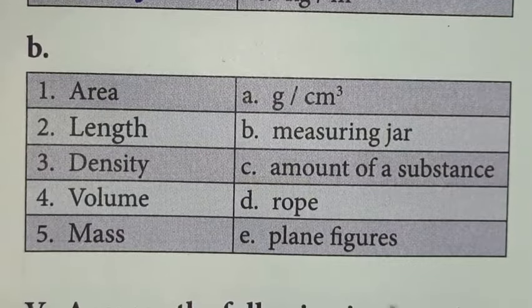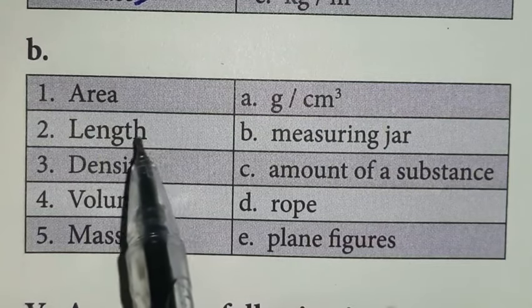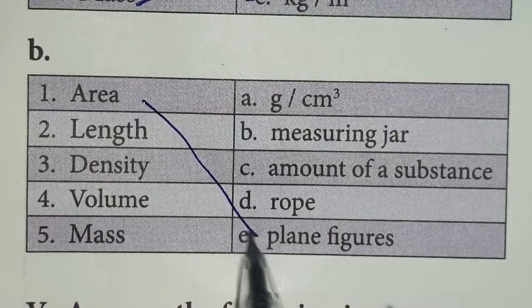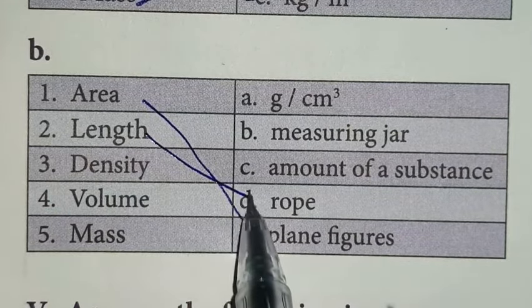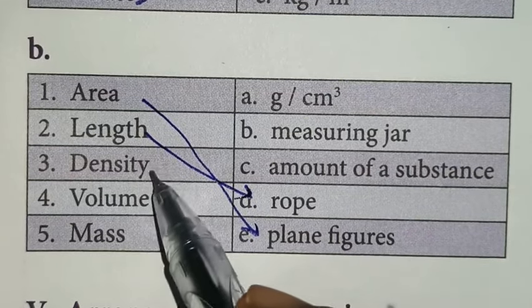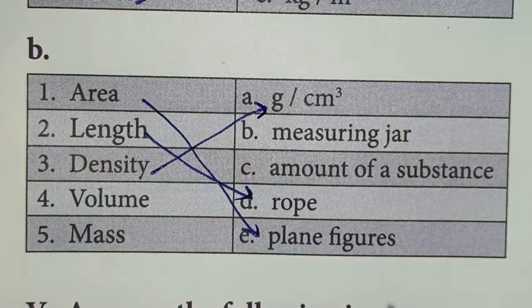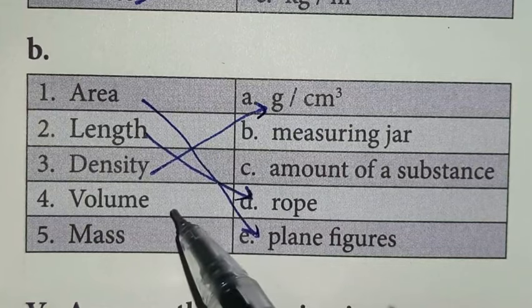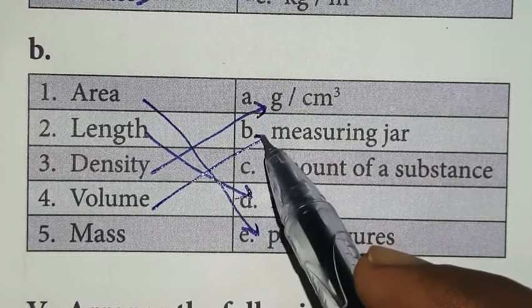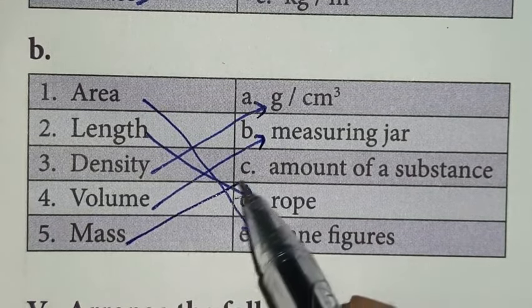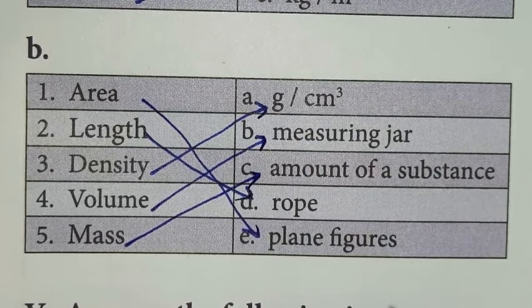Next, second, measure following. Area, that is plane figures. Length, rope. Density, gram per centimeter cube. Volume, that is measuring jar. Mass, that is amount of substance.